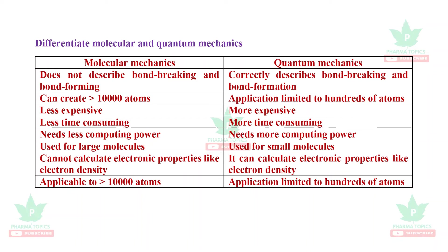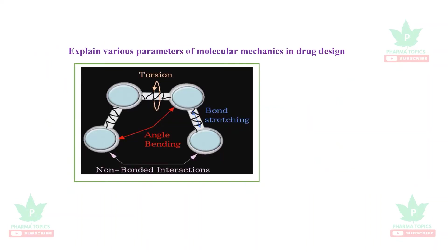Quantum mechanics is limited to approximately hundreds of atoms. Molecular mechanics needs less computing power and is used for large molecules, whereas quantum mechanics needs more computing power and more graphics processing, being used for small molecules. Molecular mechanics cannot calculate electronic properties like electron density, whereas these can be calculated using quantum mechanics.